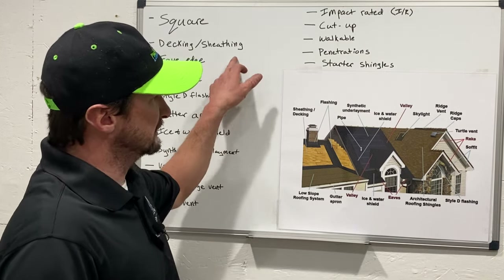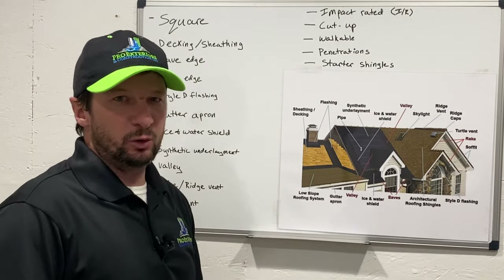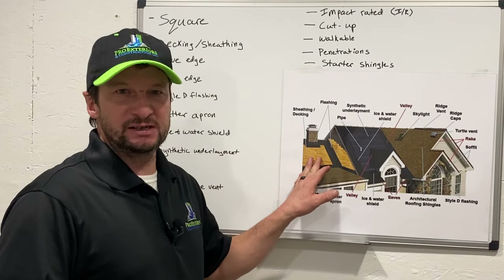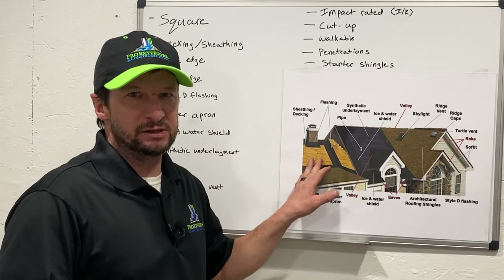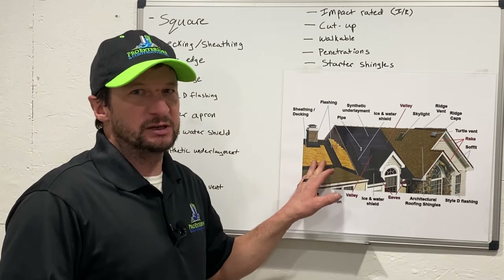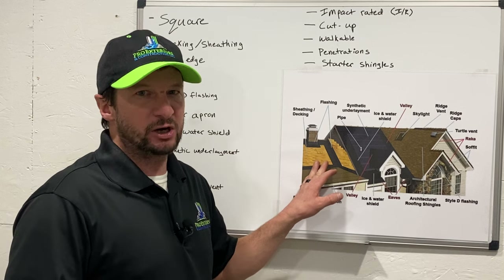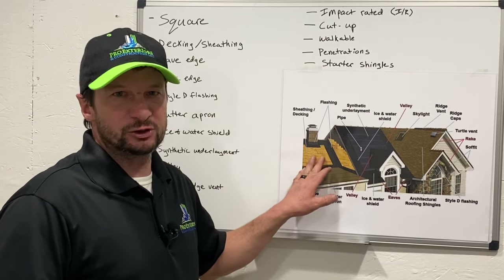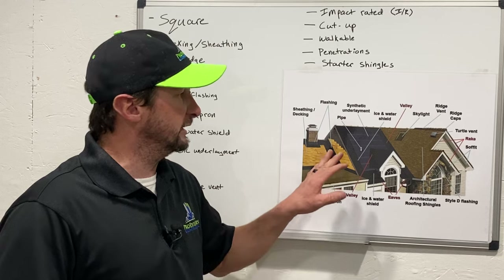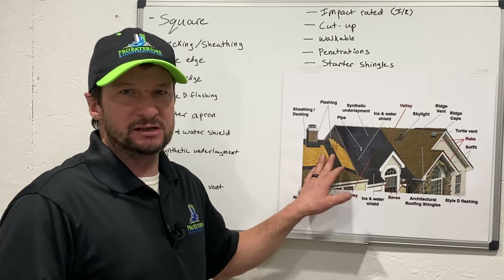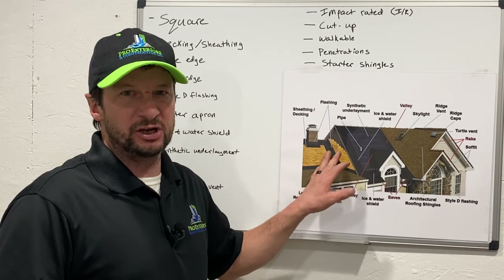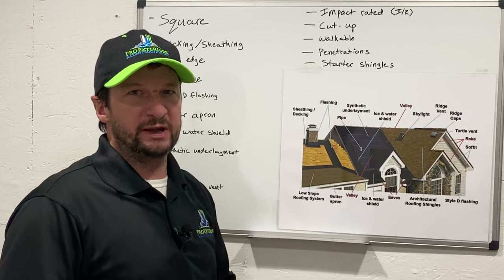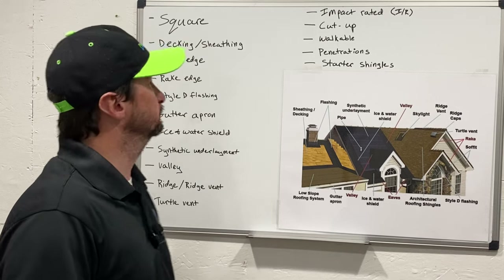The next one is decking or sheathing. That's the part of your roof that sits directly on top of your trusses, so it's considered a structural component of your roof. It sits on top of your trusses, but it's underneath the underlayment, underneath the shingles, and it is at the very bottom of the roofing system.